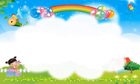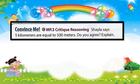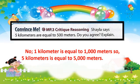Let's start with convince me. Shaila says 5 kilometers are equal to 500 meters. Do you agree? Explain. No, because 1 kilometer is equal to 1,000 meters. So 5 kilometers is equal to 5,000 meters. You are going to multiply the 5 kilometers by 1,000 meters. So 5 times 1,000 equals 5,000 meters.